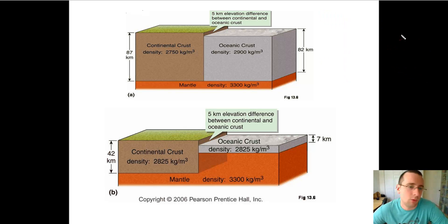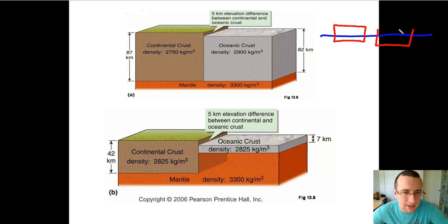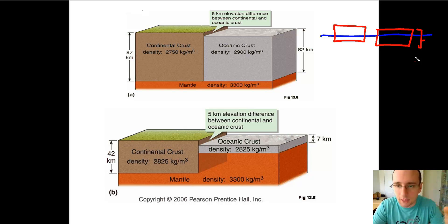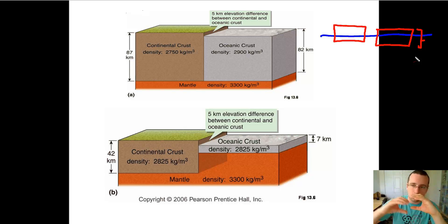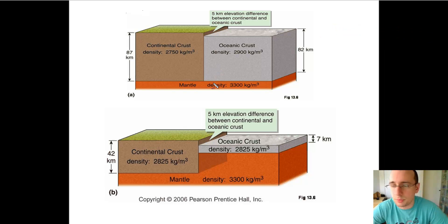This explanation cannot be right because of what we learned about how objects float. The continental crust is not as dense as the mantle, and objects which are not as dense will float higher into the liquid with a greater ratio of exposed material. The difference in density is minimal, but you should expect the oceanic crust to be slightly thinner and to have a slightly larger ratio of material underneath than above. So that picture cannot possibly represent what we expect from oceanic crust versus continental crust.